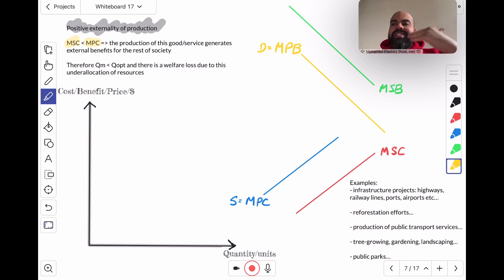an external benefit is basically like a negative cost, right? So what it does is it creates this outcome where marginal social cost is less than MPC, marginal private cost. The production of this good or service generates external benefits for the rest of society.